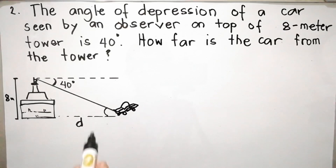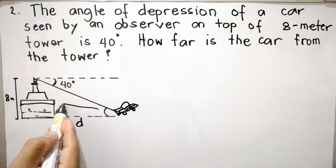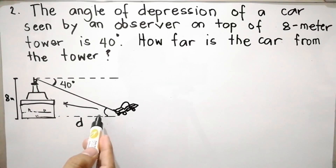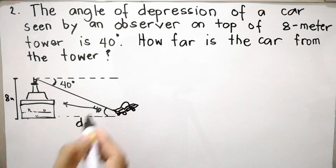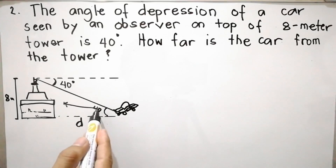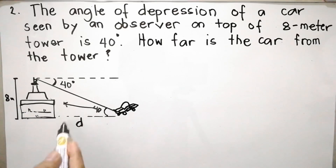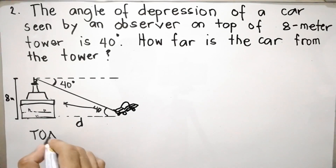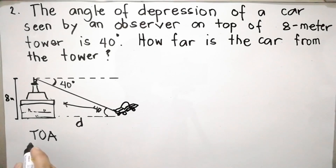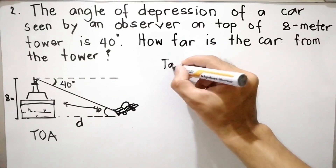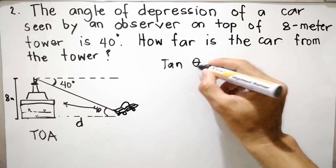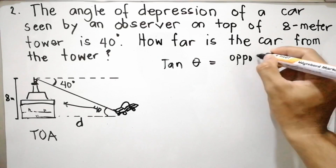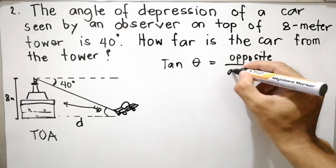The angle of depression equals the angle of elevation, so we can use 40 degrees. The opposite side of this 40-degree angle is 8 meters, and the missing value is the adjacent side — the distance. Analyzing the given, we have opposite and adjacent, so we use TOA, which is the tangent function. Tangent theta equals opposite over adjacent.